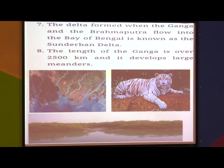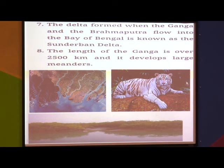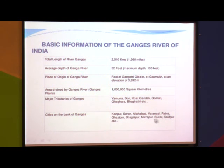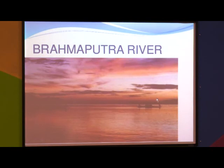The Ganga develops large meanders — meaning the river does not flow straight but flows in a crisscross or winding way. Ganga and Brahmaputra together form the largest delta called the Sundarban Delta, which is famous for white tigers and Sundari trees. Major cities on the Ganga bank include Allahabad, Varanasi, Patna, Mirzapur, and Kanpur.